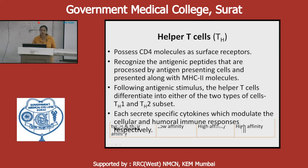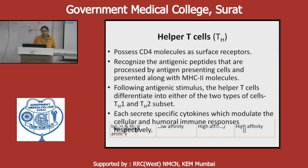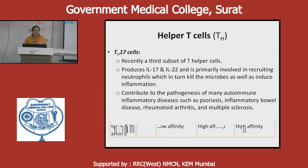Following antigenic stimulus, helper T cells differentiate into either Th1 or Th2. Activation of T helper type 1 leads to cell-mediated immunity, while activation of T helper type 2 leads to humoral immune response. A recently identified third subset — T helper 17 cells — produces interleukin-17 and interleukin-22, and is primarily involved in recruiting neutrophils to heal microbes and induce inflammation. It may contribute to pathogenesis of autoimmune inflammatory diseases such as psoriasis, inflammatory bowel disease, rheumatoid arthritis, and multiple sclerosis.